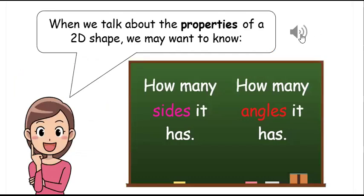When we talk about the properties of a 2D shape, we may want to know how many sides it has or how many angles it has.